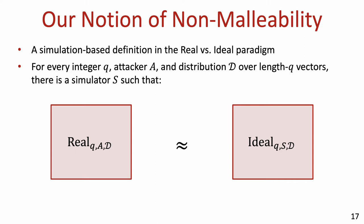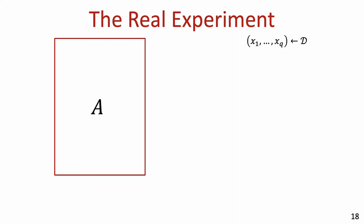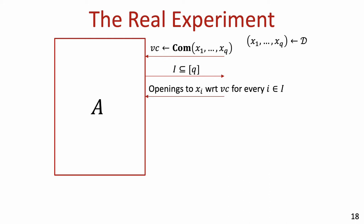Before we define the experiments, two technical details are in order. First, as is the case for standard VCs and standard non-interactive non-malleable commitments, our definition is in the CRS model. Secondly, in our formal definition, the distribution D over vectors must satisfy a technical requirement. For ease of presentation, we will ignore both of these facts for now. The real experiment is as follows: a vector x1 to xq is sampled according to distribution D, and the adversary is given the commitment to this vector using the vector commitment scheme. The adversary outputs a subset I of indices and receives local openings to all the xi's corresponding to subset I.